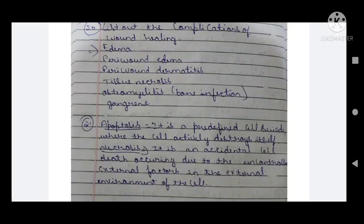Twenty-first question: apoptosis and necrosis. Apoptosis is a predefined cell suicide where the cell itself gets destroyed. Necrosis is accidental cell death occurring due to uncontrolled external factors in the environment of the cell — it is an uncontrolled or sudden death.